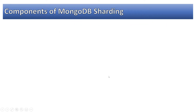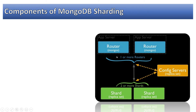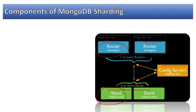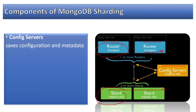Moving on to the components of MongoDB sharding — we have primarily three components: config servers, shard, and router. We're going to discuss each of these in detail. All three components are required. We can discuss whether we want one config server or multiple, one router or multiple shards. In a sharding cluster, we will definitely have multiple shards, and the router is basically the mongos utility which has to be downloaded and run.